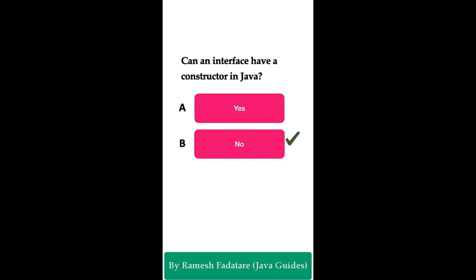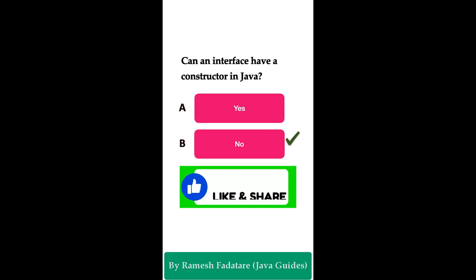In order to create an object of a class, the class must have a constructor. Interfaces cannot have constructors in Java because they cannot be instantiated. To create an object of an interface, you must create a class that implements the interface, and then you can create an object of that class.